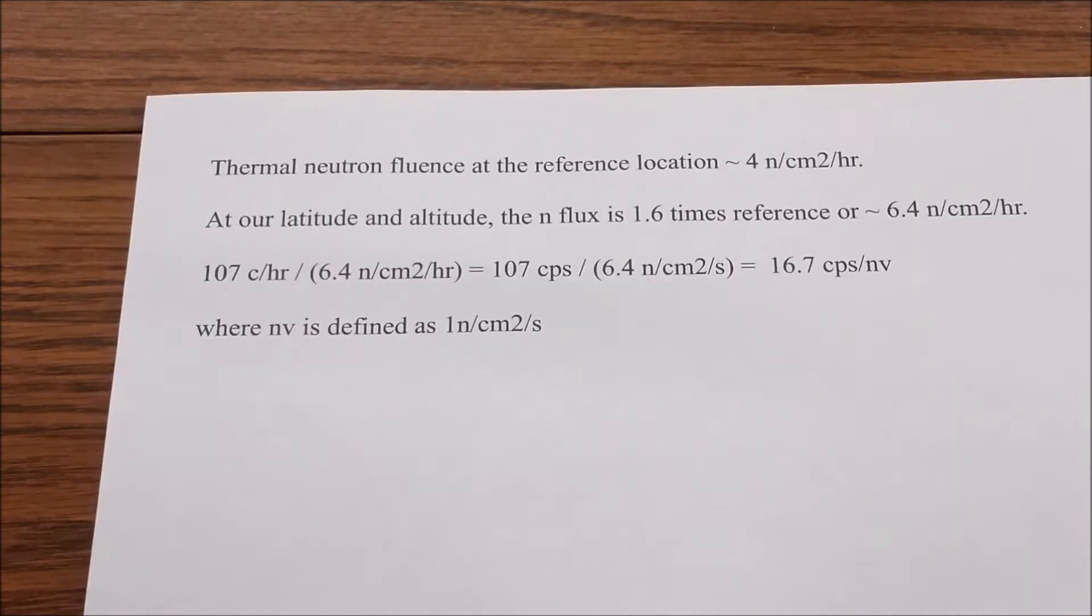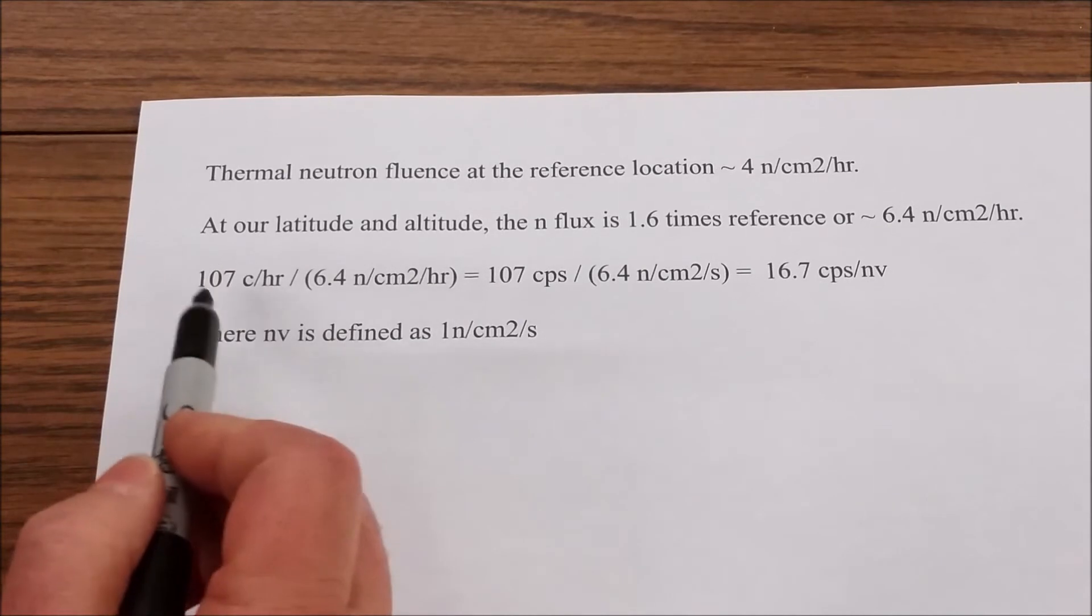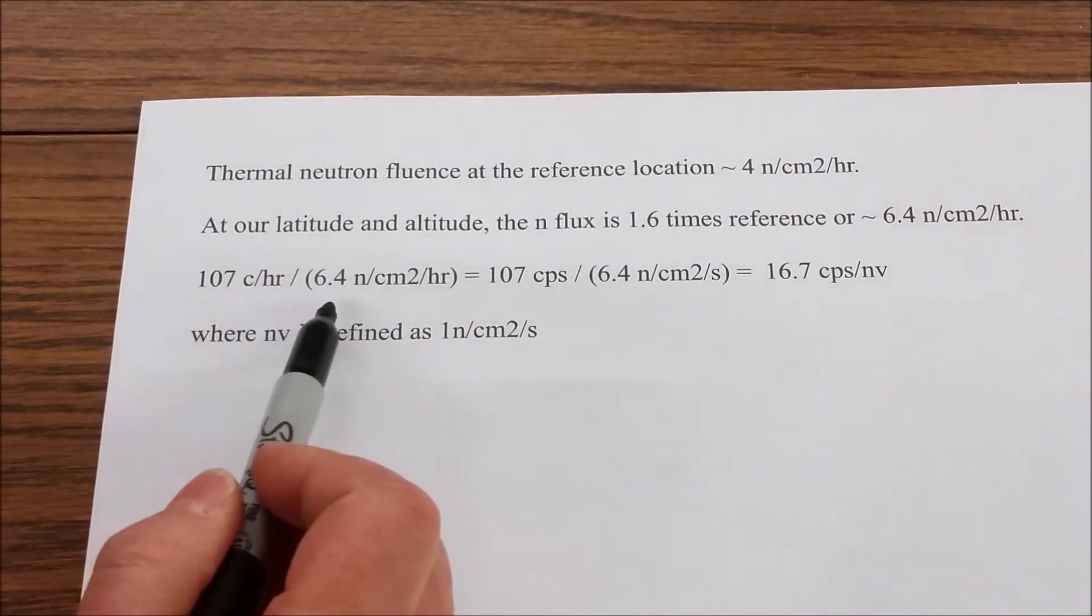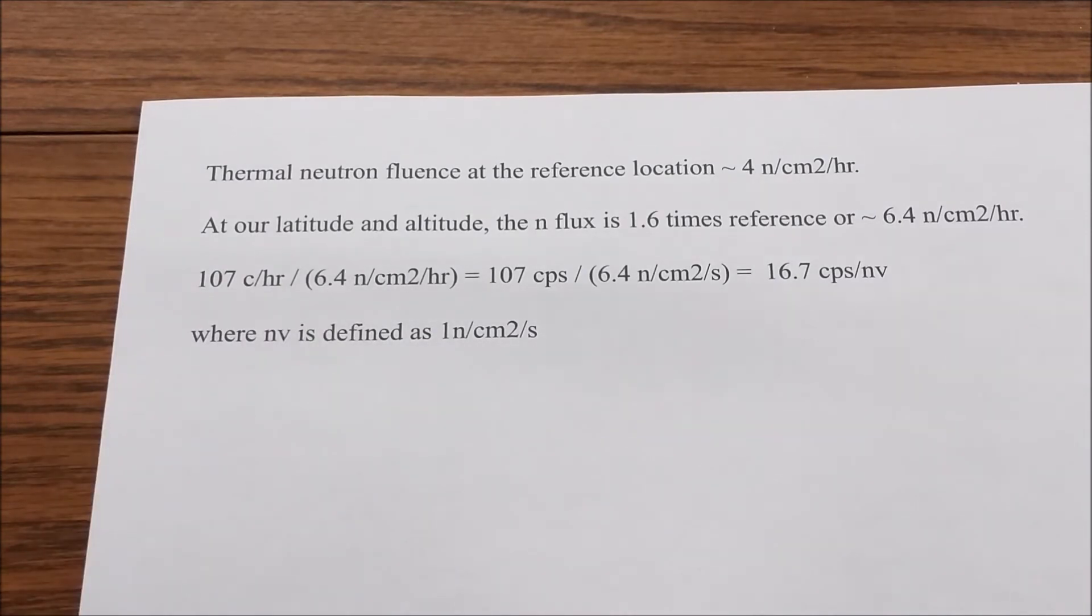So we had 107 excess counts per hour, neutron counts per hour, and we're saying that is due to 6.4 neutrons per square centimeter per hour. The hours cancel out, so we can replace that by seconds if we want to, which gives us 16.7 counts per second per NV. And NV is defined as one neutron per square centimeter per second.